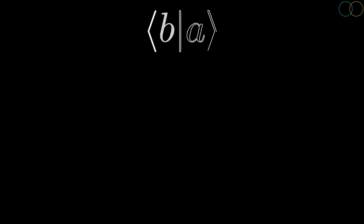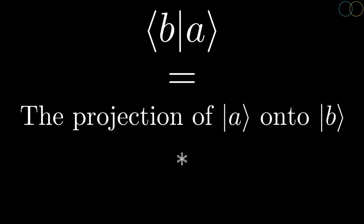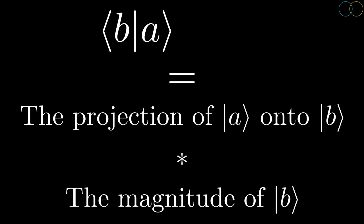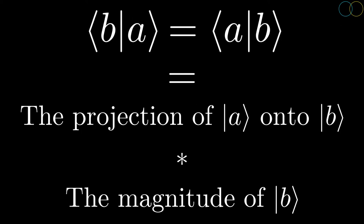There is a similar concept called the inner product. The inner product of two vectors is one vector projected onto the second, multiplied by the magnitude of the second vector. The inner product is a very useful concept, in part because the inner product of two vectors a and b gives the same result as the inner product of b and a. Note as well that if vector b has a magnitude of one, then the inner product of the two vectors will equal the projection of a onto b.